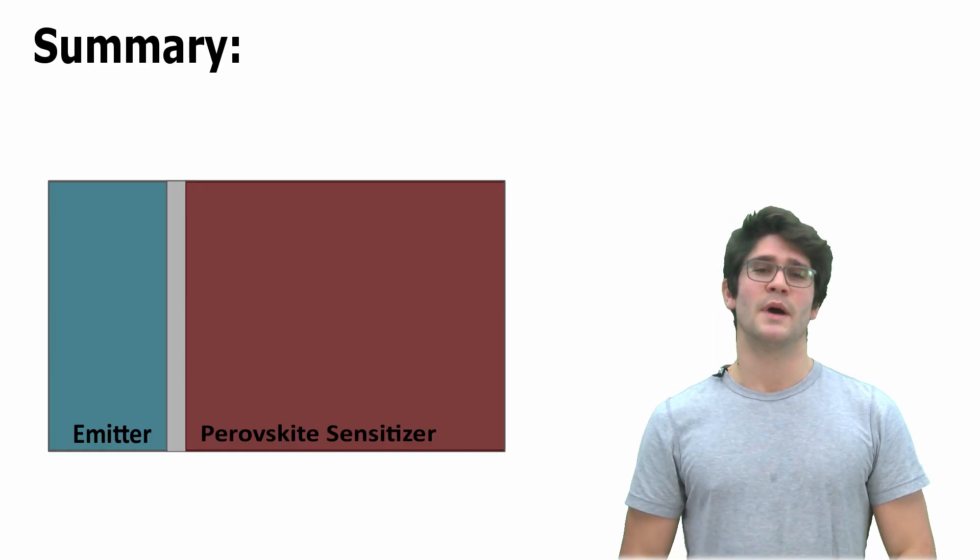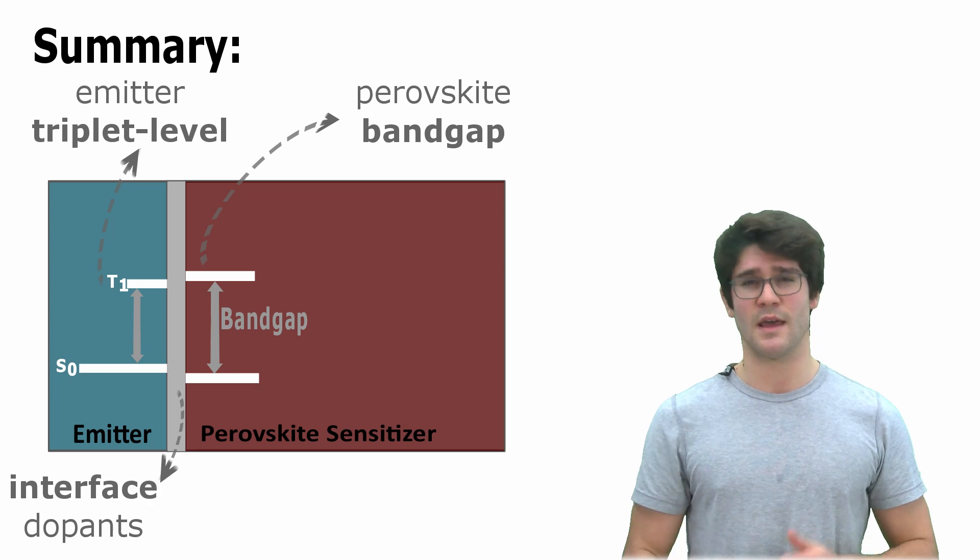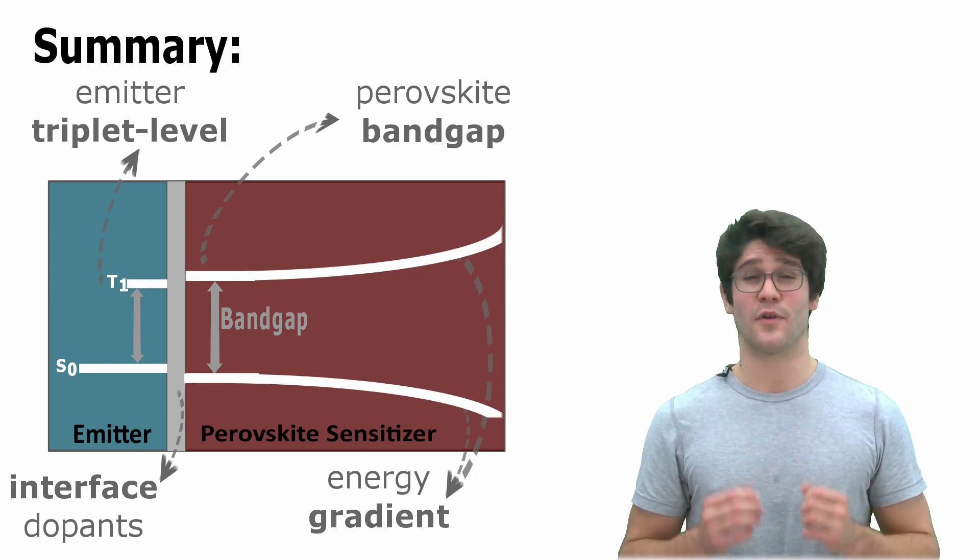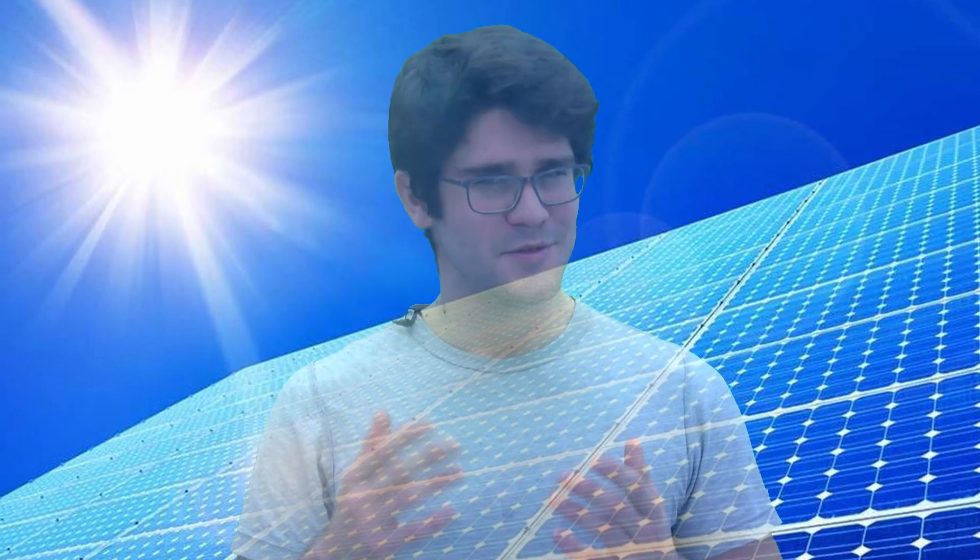And finally, by tuning the perovskite bandgap, the emitter triplet level, interface dopants and the energy gradient, we aim to explore the parameters for a high efficiency upconversion under low excitation conditions. Successfully employing perovskite for this purpose will be a relevant step for further improvement in photovoltaics.